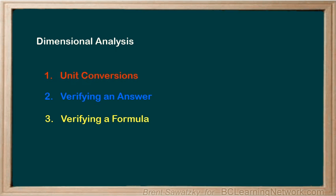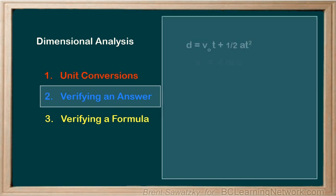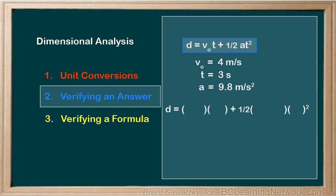Next, let's look at verifying an answer using dimensional analysis. If we were given the following equation along with measurements, we could lay it out as such. d equals v₀t plus 1 half at squared, where we know that the v₀ is 4 meters per second, the t is 3 seconds, and the a is 9.8 meters per second squared. If we lay it out here, we have 4 in for our v₀ and then 3 seconds in for our t, 1 half, 9.8 meters per second squared with 3 seconds.